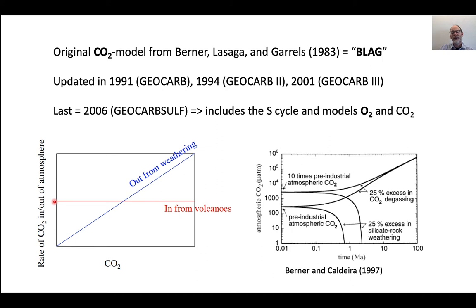If you consider that volcanoes are just producing CO2 — there's some net production from volcanoes — and let's assume that's a constant through time regardless of what the CO2 is in the atmosphere, there's a point where these are going to be balanced. Whatever is coming into the atmosphere from volcanoes is being removed from the atmosphere by weathering and carbonate deposition.